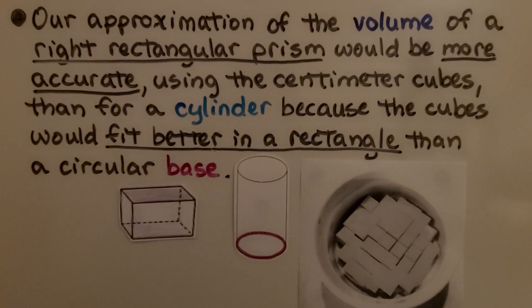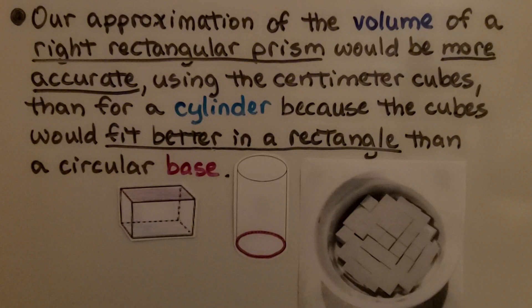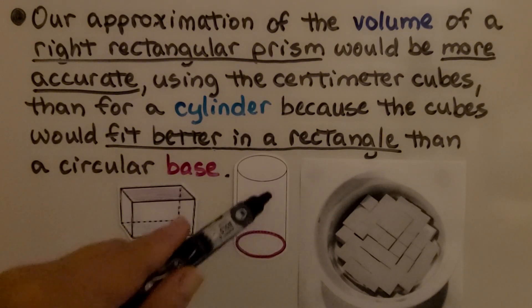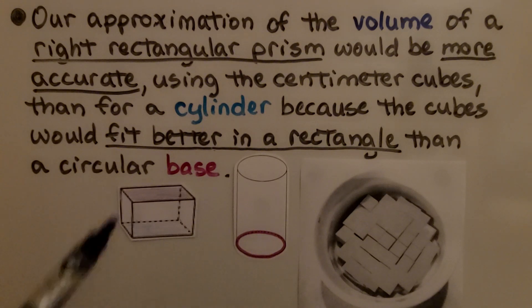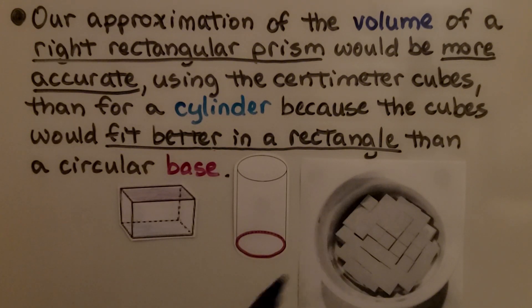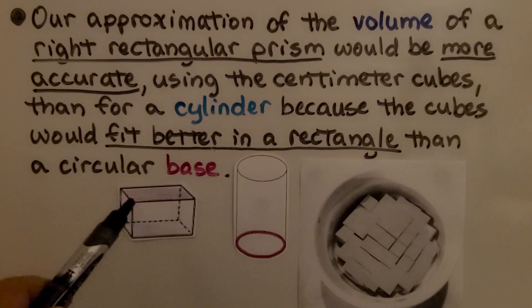Our approximation of the volume of a right rectangular prism would be more accurate using centimeter cubes than for a cylinder, because the cubes would fit better in a rectangle than a circular base. We have all this extra space here. If we did it in a right rectangular prism, they might fit neatly into the bottom without these extra spaces. This means the approximation for the right rectangular prism would be more accurate.